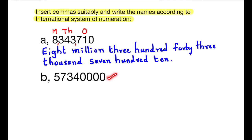Next number: 57,340,000. For this number, we insert the first comma after the hundreds place, that is after three digits from the right — ones, tens, hundreds — then thousands, ten thousands, and hundred thousands. The next comma we insert after the hundred thousands place.